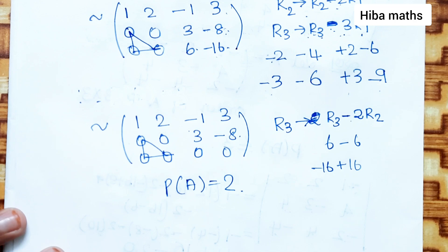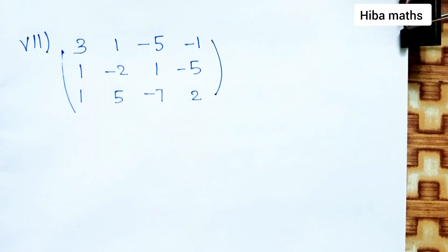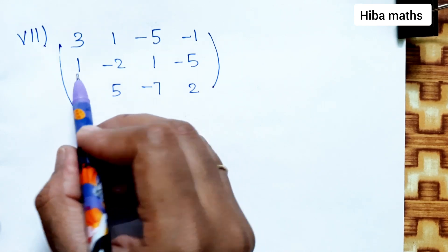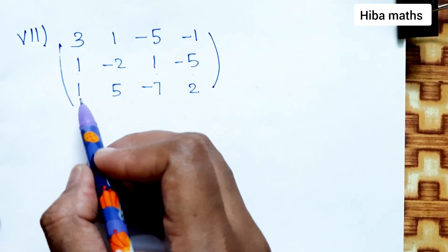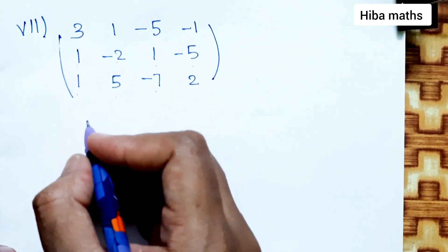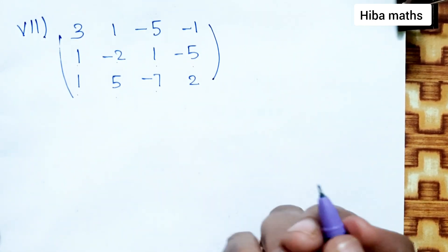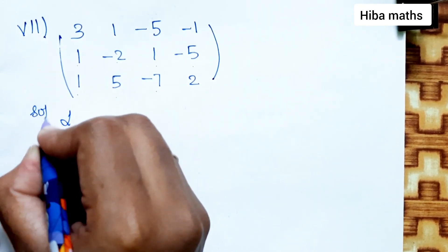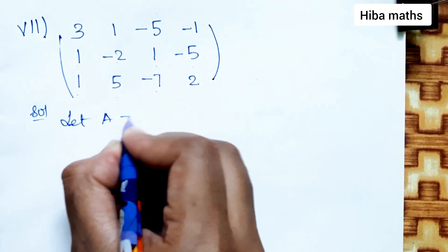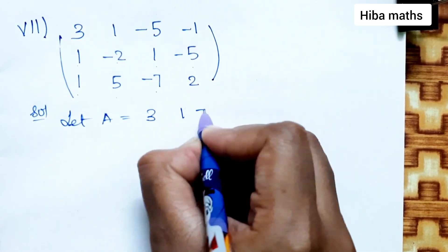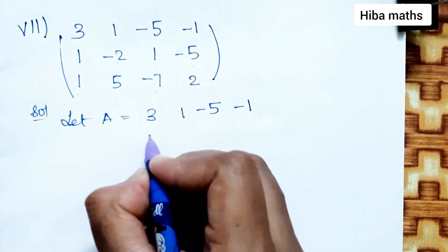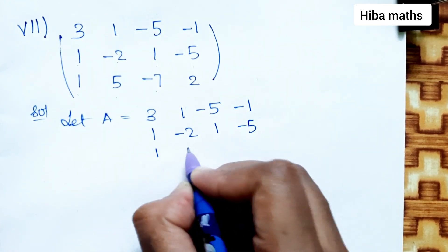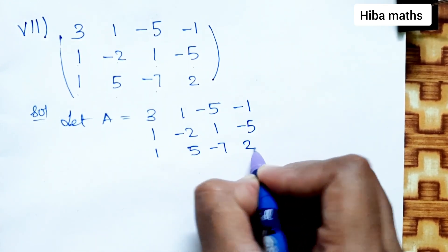Seventh question: matrix is 3 by 4. Let A equal to [3, 1, -5, -1; 1, -2, 1, -5; 1, 5, -7, 2]. Since the first row does not start with a leading 1 conveniently, we swap R1 and R2 to get [1, -2, 1, -5; 3, 1, -5, -1; 1, 5, -7, 2].